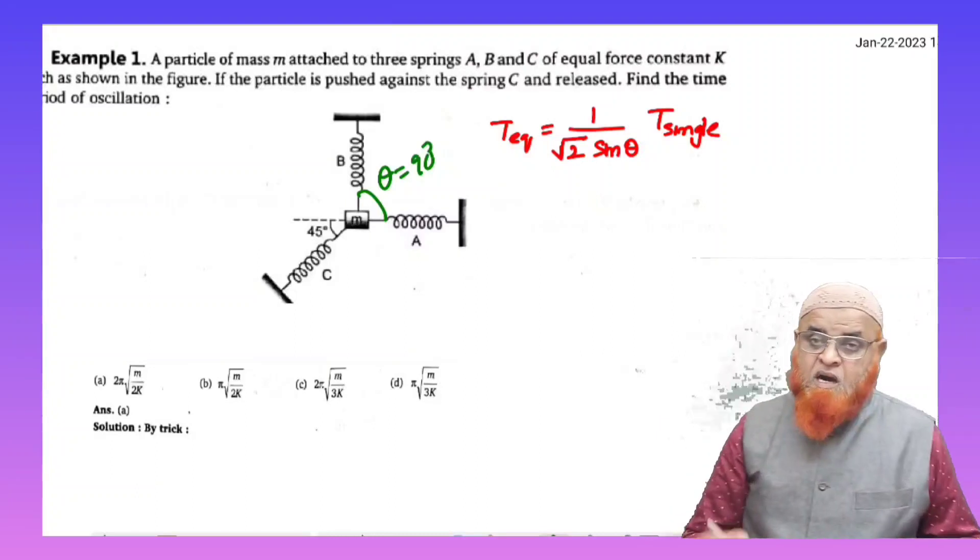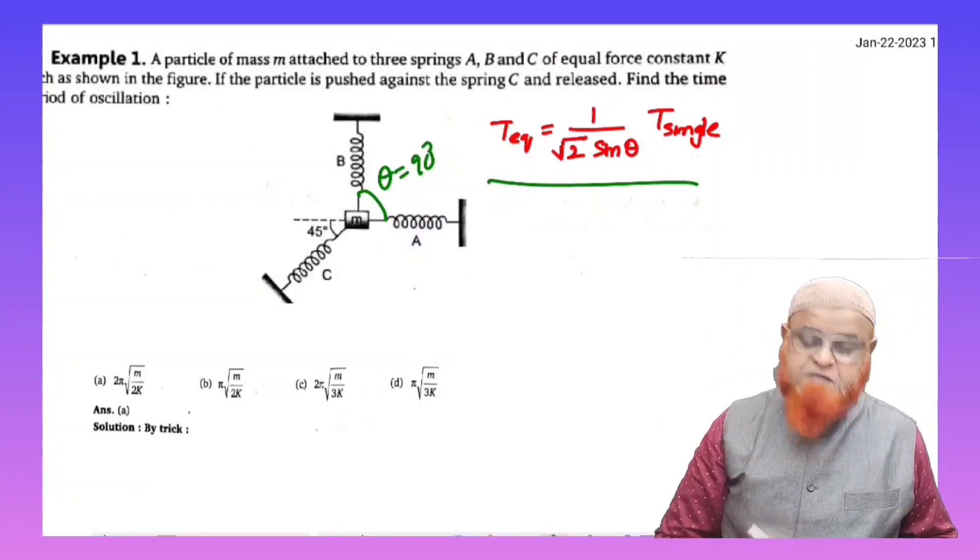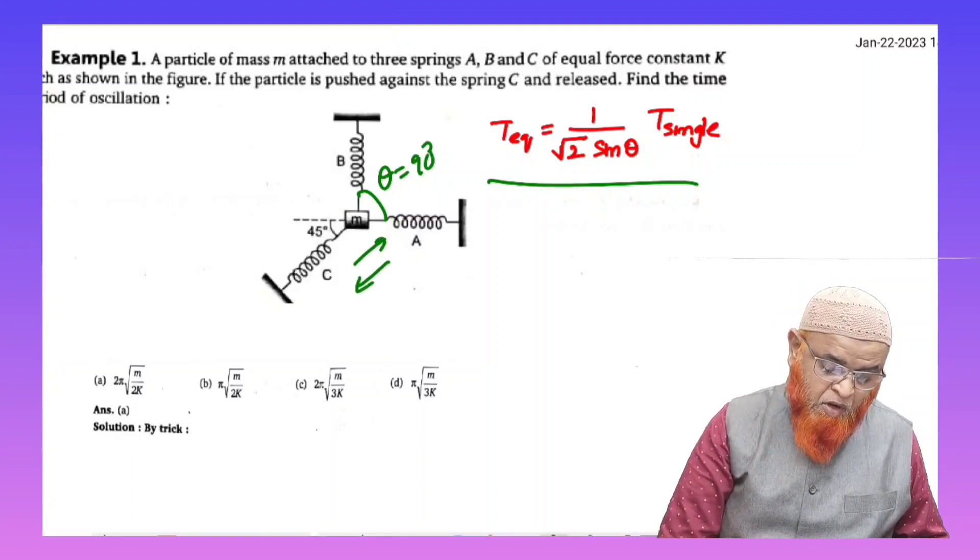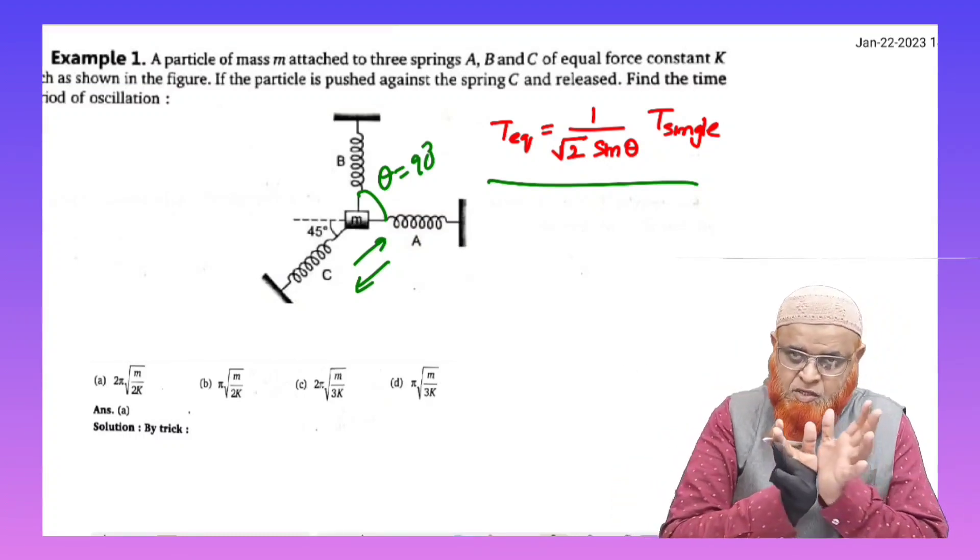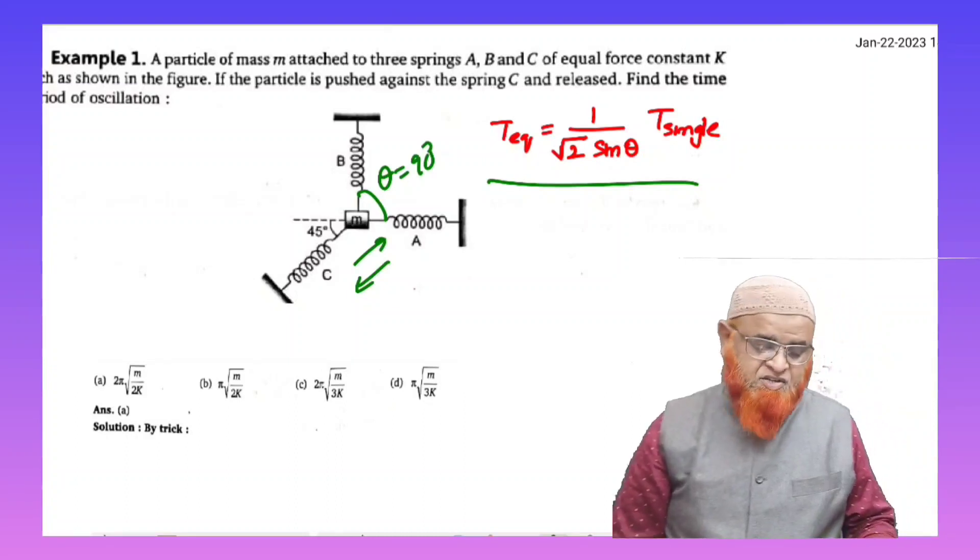Let us go ahead now. I have created a shortcut here. If you see the shortcut, T equivalent in this spring, because this block is oscillating in this direction up and down, and the two springs are having 90 degrees, one spring is in the oblique direction.